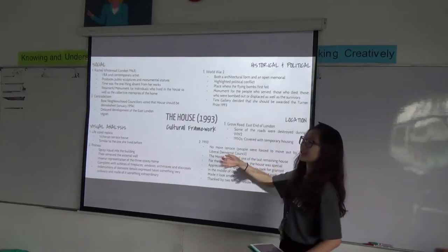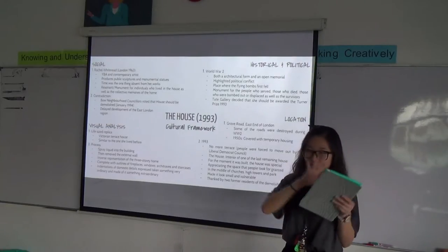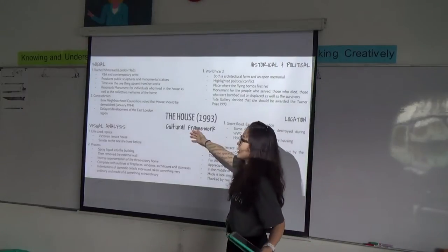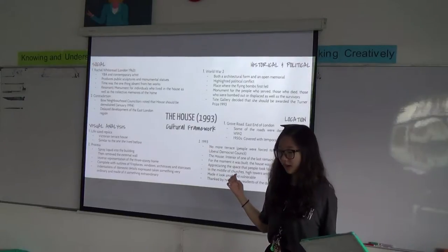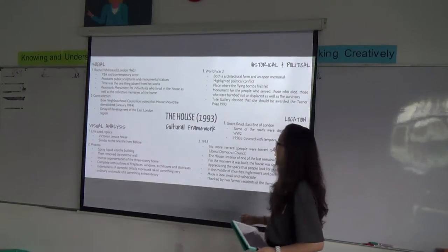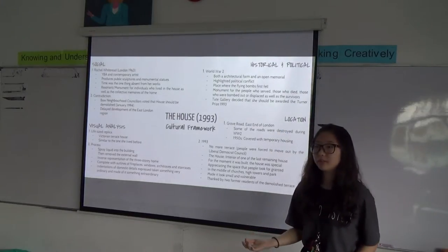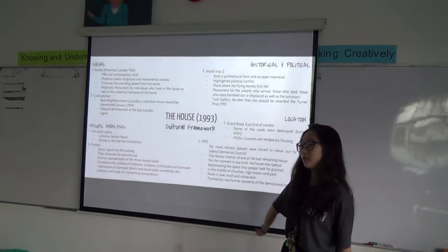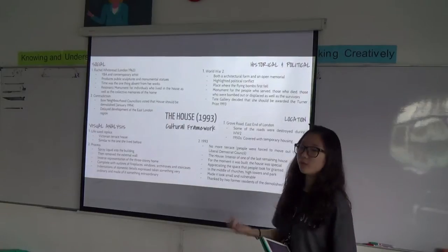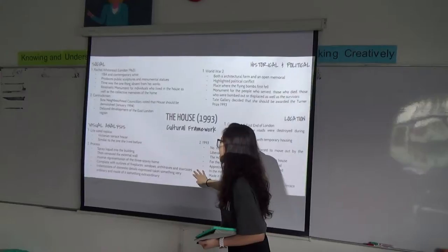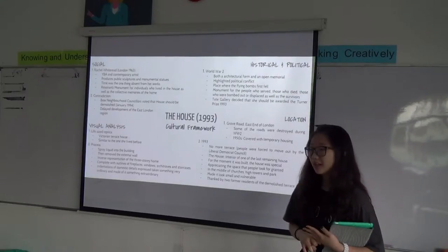The process of making 'House' sounds uncomplicated, but it's actually very complicated because she achieved the perfect shape. Firstly, they sprayed liquid cement into the building. After it hardened, they carefully removed the external walls. It's the first representation of a three-story house in this way — because people usually think the outside of a house matters most, but for her, what was inside was more personal and meaningful. The finished work looks very complete, with clear outlines of fireplaces, windows, architraves, and staircases, which is exactly why people found it so astonishing when they saw it.